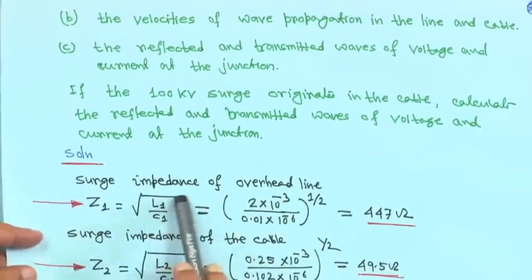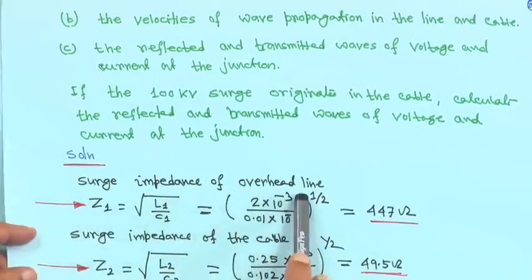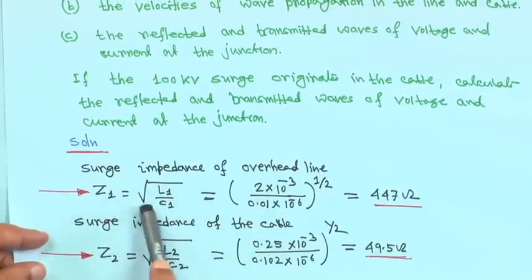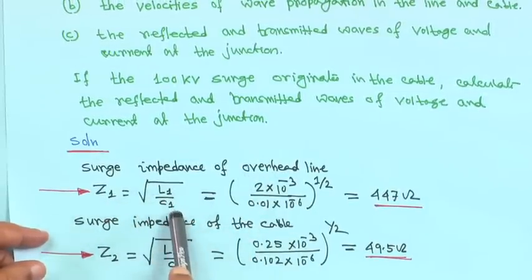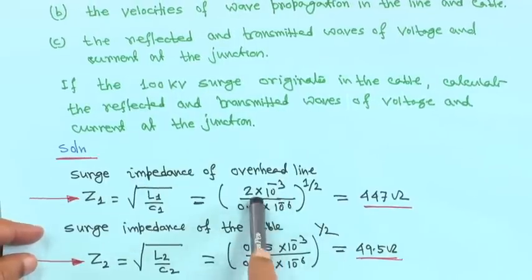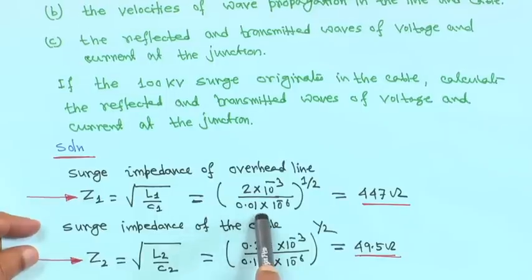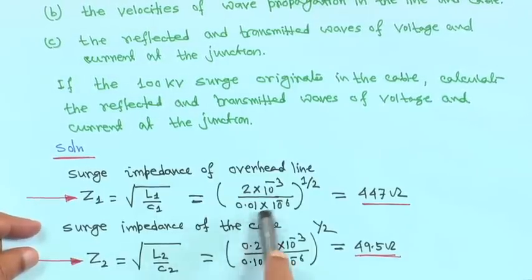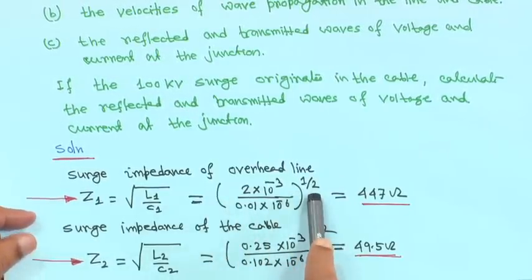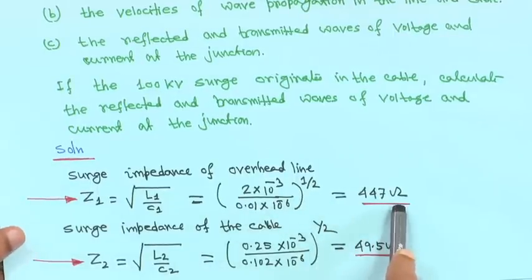Solution: First, compute the surge impedance of the overhead line, call it Z1. Z1 equals root over L1 upon C1. L1 is 2 milli-henry, so 2×10⁻³, and C1 is 0.01 micro-farad, so 0.01×10⁻⁶. Taking the square root gives 447 ohms.